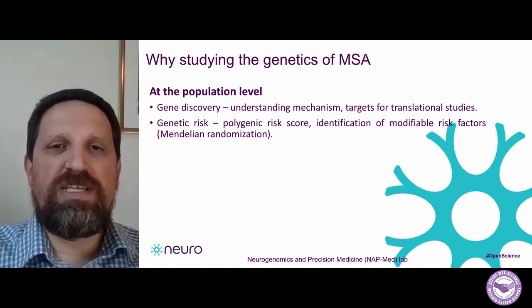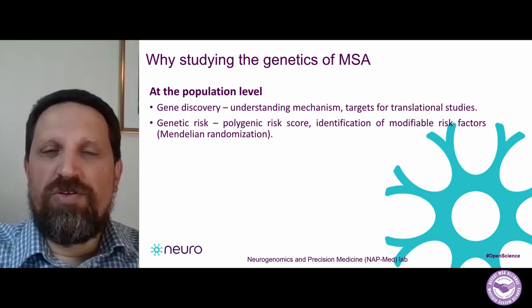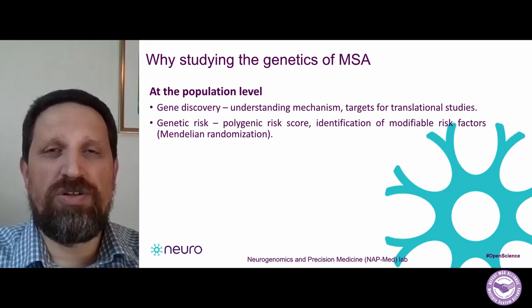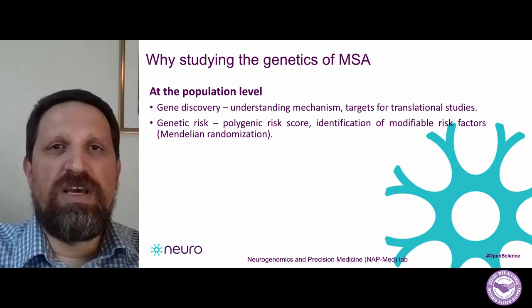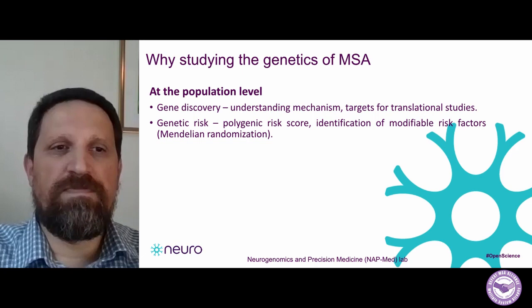Studying genetic risk also allows us to identify what we call modifiable risk factors using a method called Mendelian randomization. In a very basic sense, we can use genetic data to identify factors that are not necessarily genetic — for example, vitamin D level, B12 level, or other factors that are not genetic but could be dependent on genetics — and understand how these risk factors may be associated with risk for MSA.